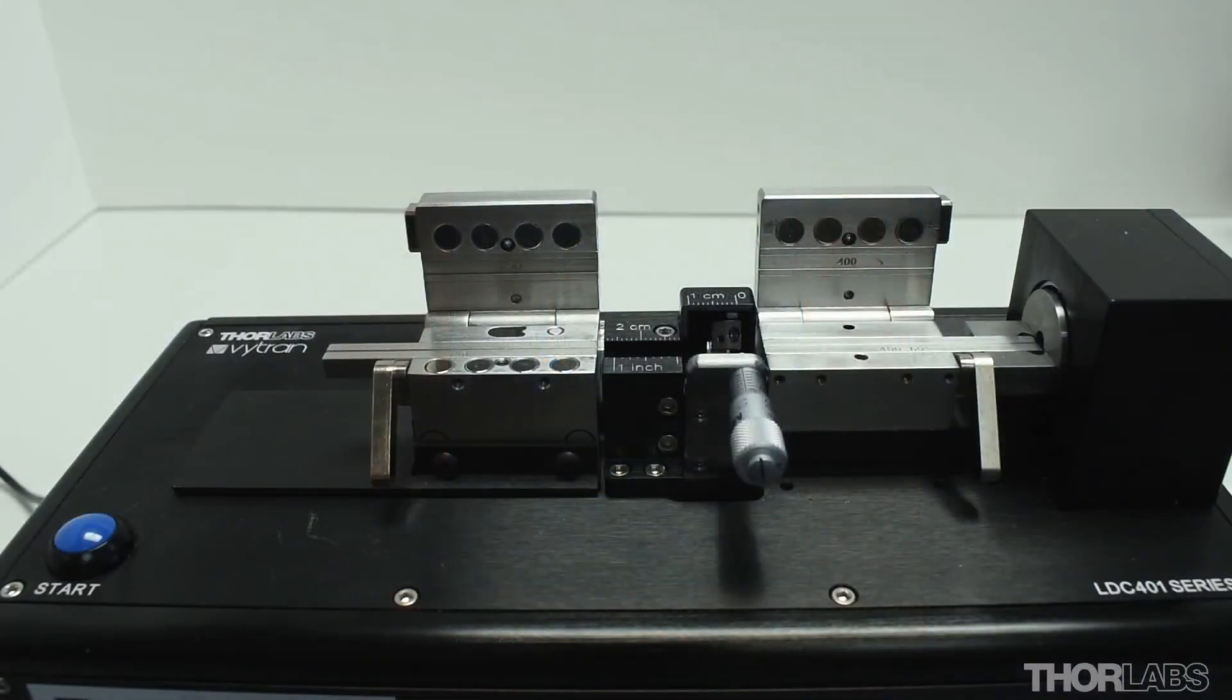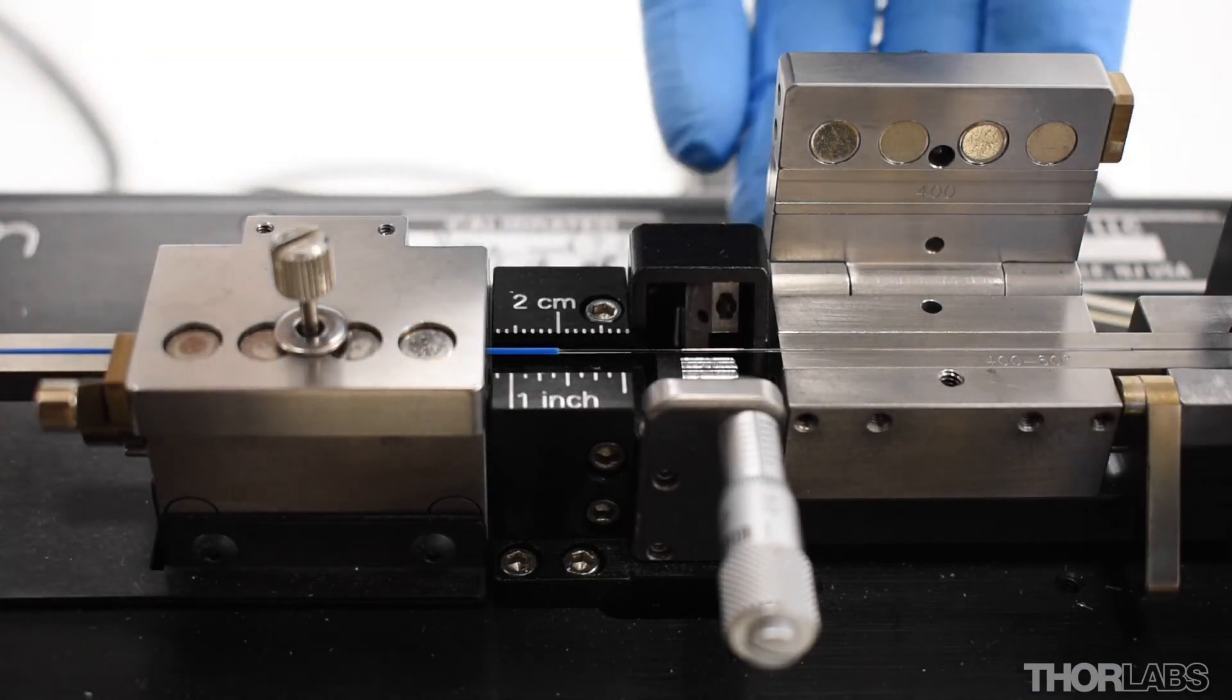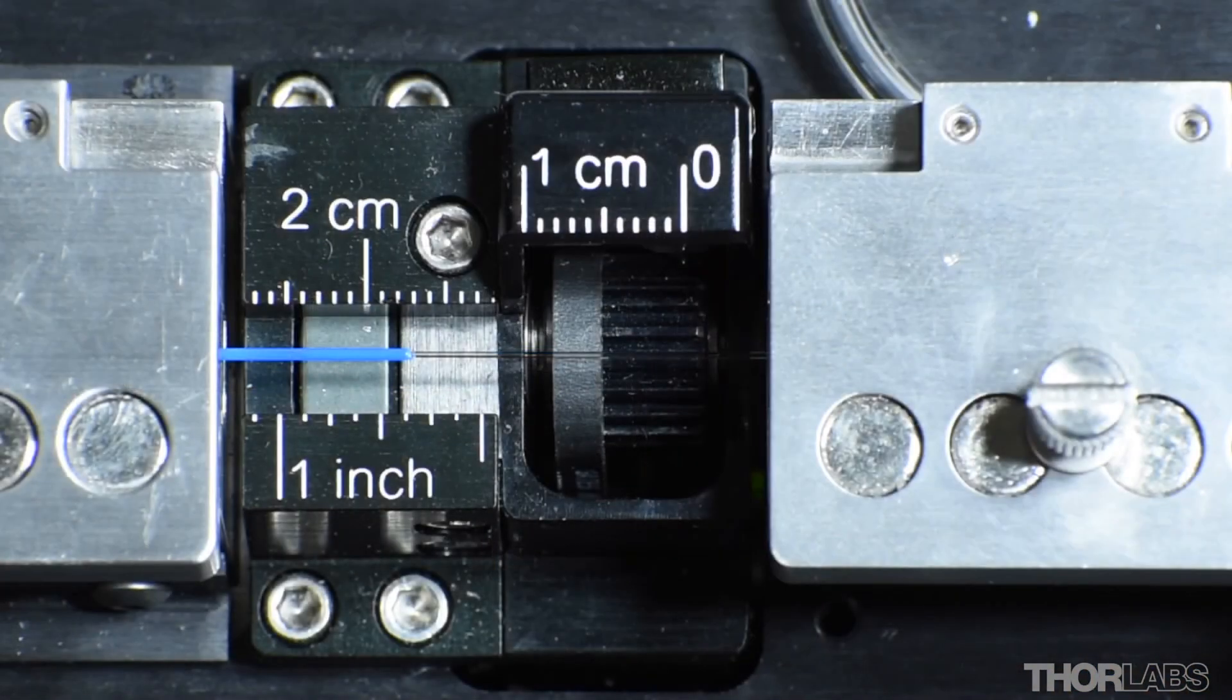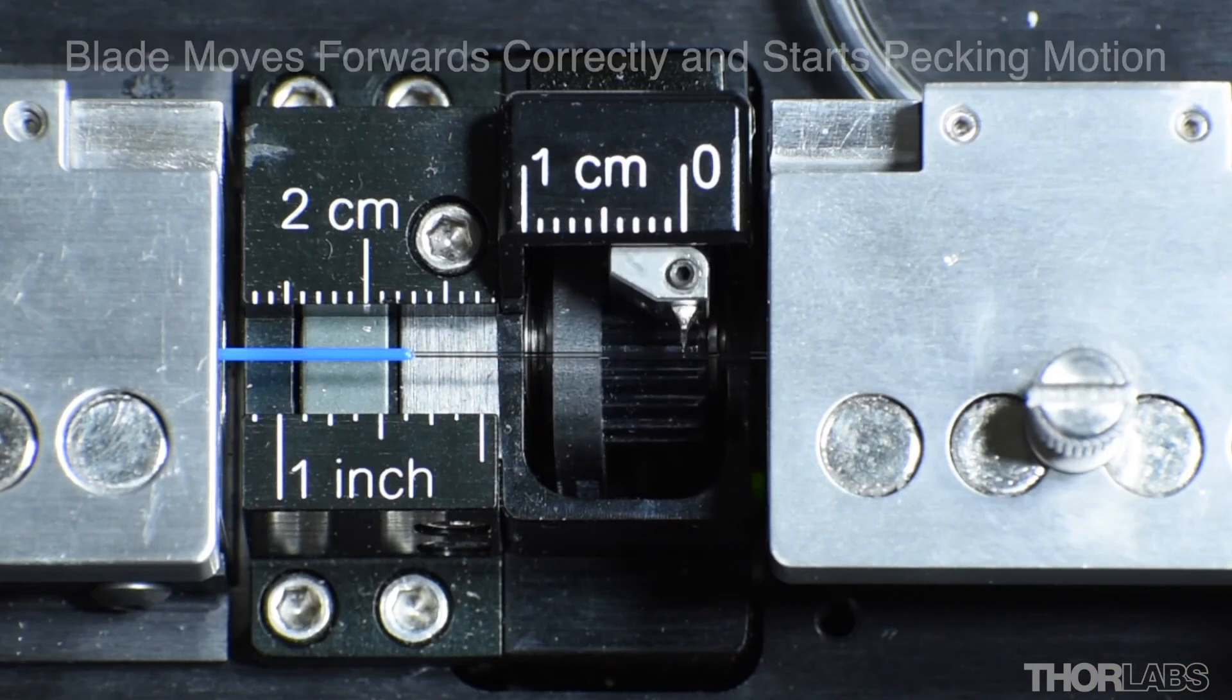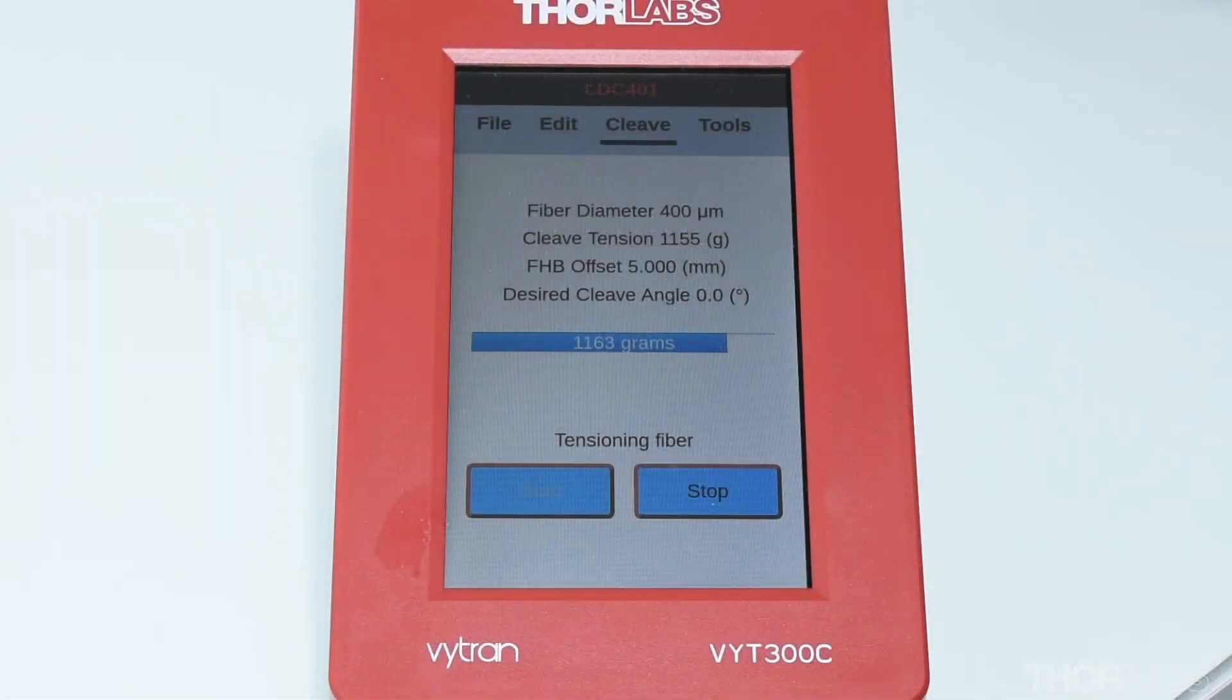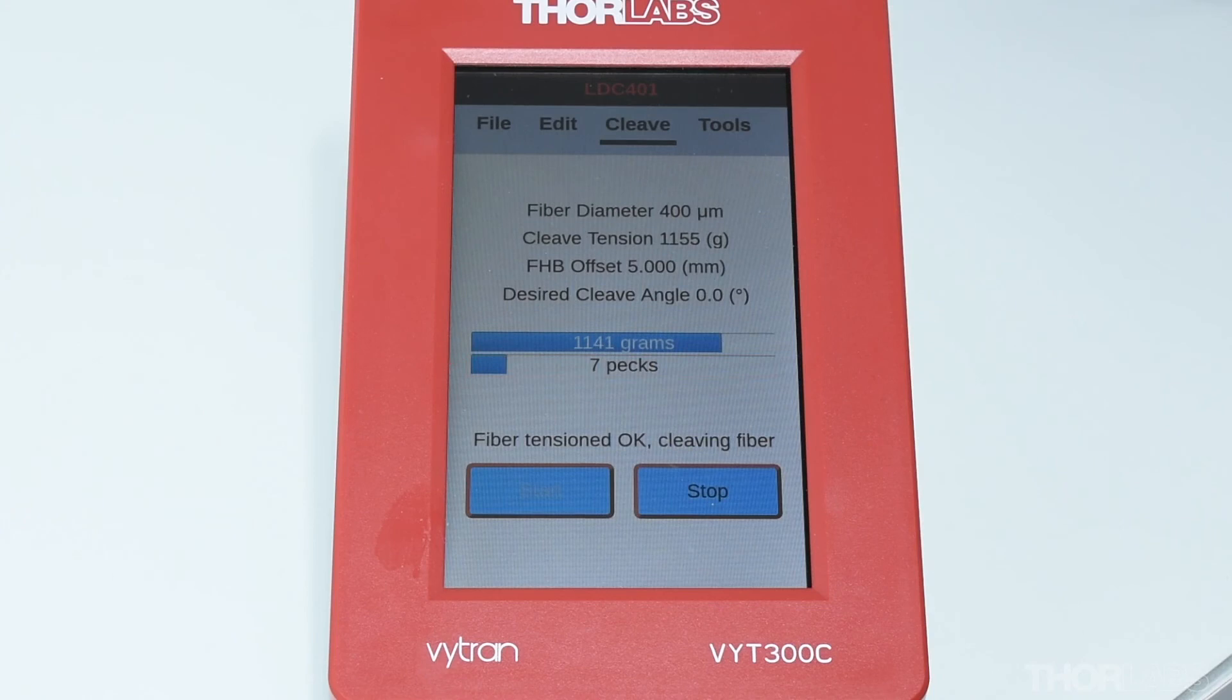Once the value of the blade offset has been set using this approach, it should be verified by performing a cleave. Load a fiber into the machine and perform a cleave. When the blade comes forwards, the handset controller also displays the number of pecs taken to cleave the fiber.